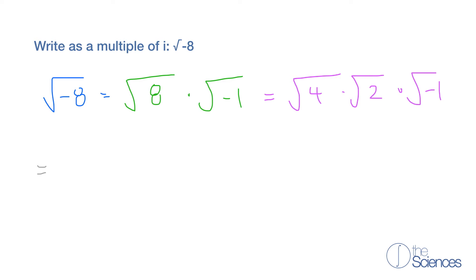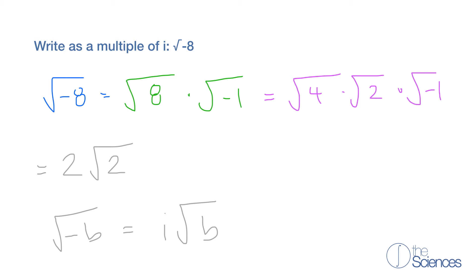So now we have the square root of 4, which is 2, times the square root of 2, times the square root of negative 1. And remember, the square root of negative b equals i times the square root of b. So if we have negative 1, we're going to have i times the square root of 1, and the square root of 1 is just 1, so we're going to have i.